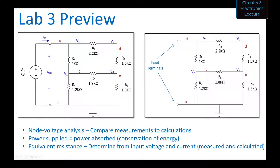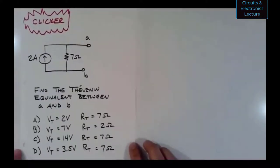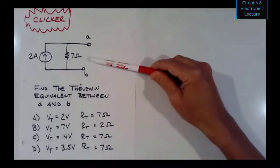What I'd like to do is start class with a clicker question from last class's topic — a Thevenin equivalent clicker. Let me switch over to a handwritten clicker problem. Take a look at this problem: you have to find the Thevenin equivalent of a circuit that has only a current source and a single resistor.